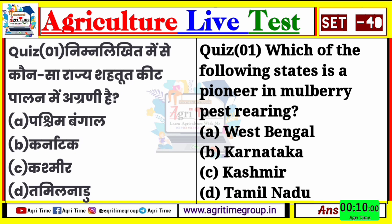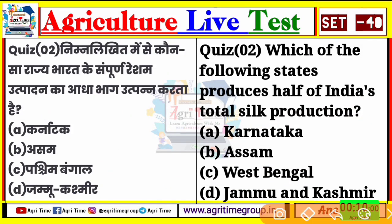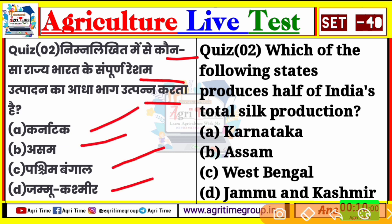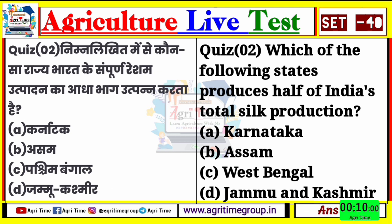चलिए बढ़ते हैं अगले quiz की ओर - quiz number two। निम्नलिखित में से कौन सा राज्य भारत के संपूर्ण रेशम उत्पादन का आधा भाग उत्पन्न करता है? यानि कि 100% पूरे भारत में उत्पादन हो तो 50% अकेला यही राज्य करता है। Options: कर्नाटक, असम, पश्चिम बंगाल और जम्मू कश्मीर। चलिए comment कीजिए।